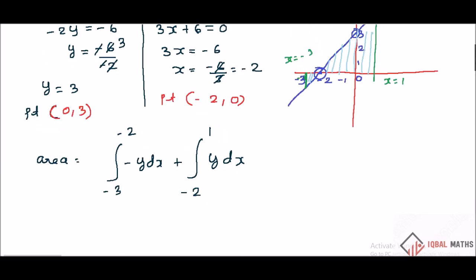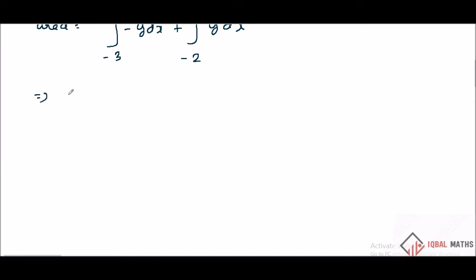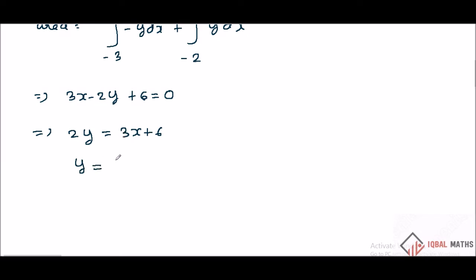Now from 3x minus 2y plus 6 equal to 0, solving for y: 2y equals 3x plus 6, so y equals 3 by 2 times x plus 2. That is, y equals 3 over 2 multiplied by (x plus 2).